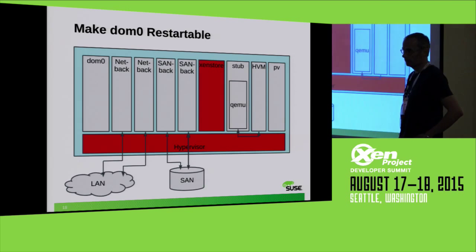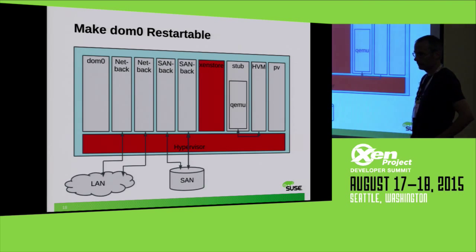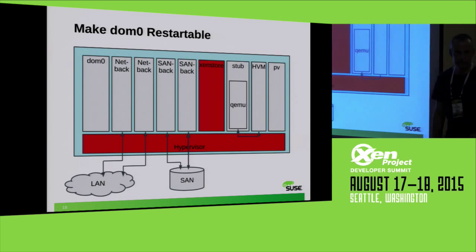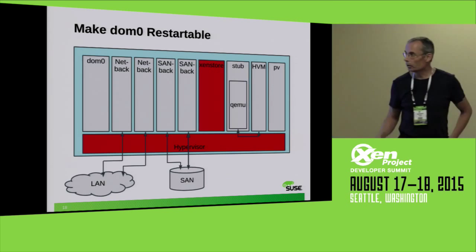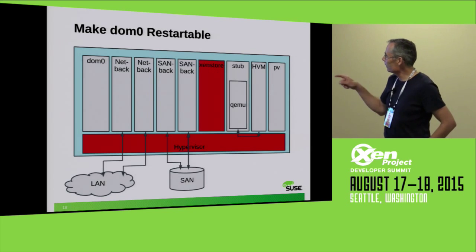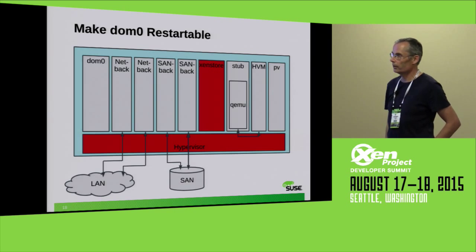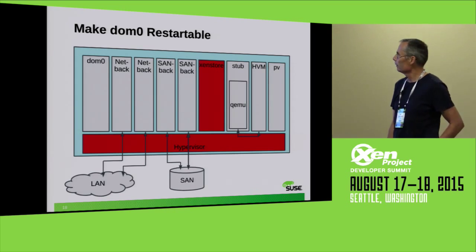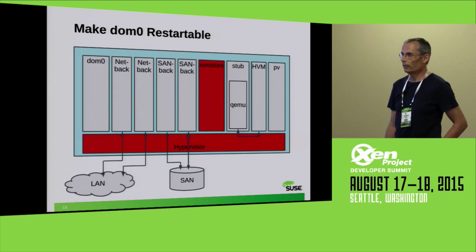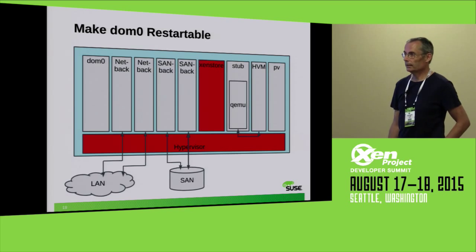The idea to do it this way is that for Fibre Channel, multipath software exists in every major operating system. For block devices, I don't think that's the case — multipathing is normally done at the Fibre Channel layer.